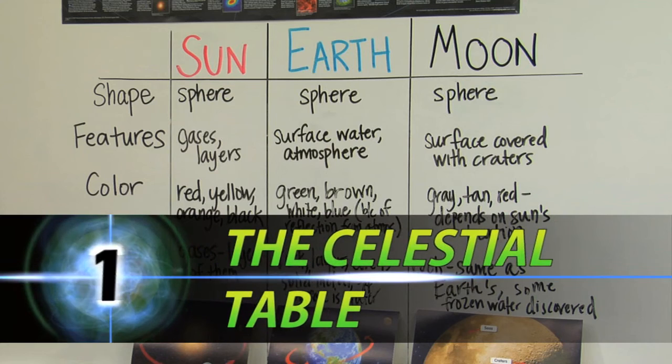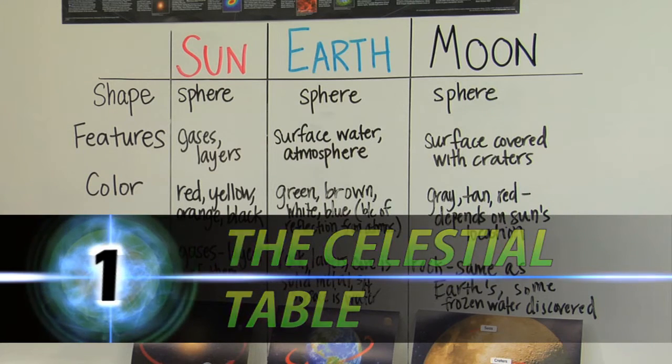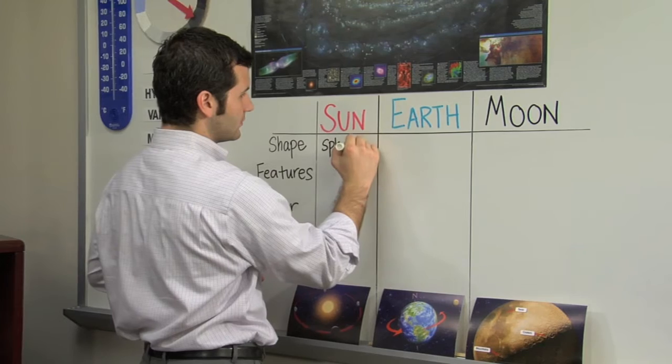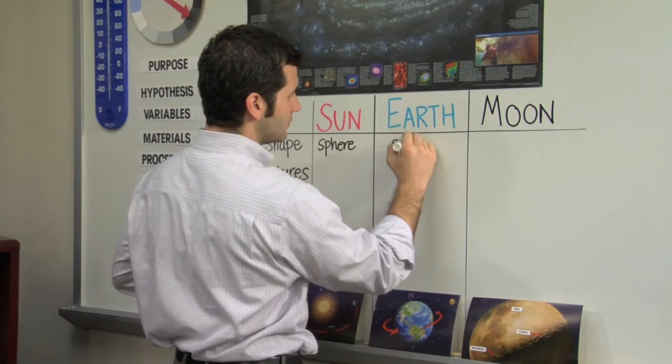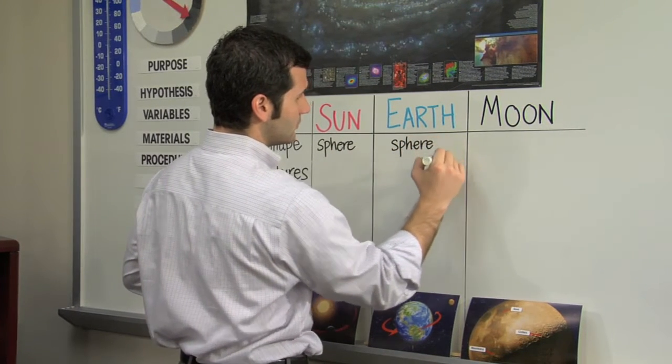Let's first create the celestial table. On the board, draw a table with three columns and label them Earth, Sun, and Moon.